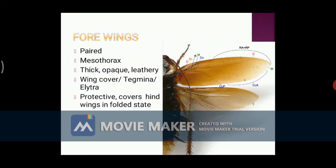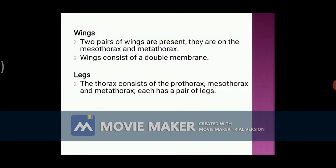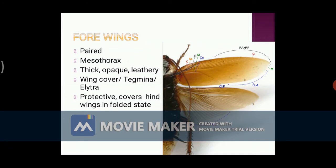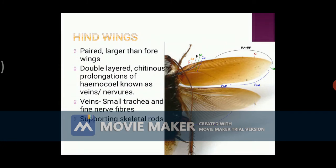Flying is because of continuous beating of the wings. Since the cockroach belongs to class Insecta, it has two pairs of wings. The first pair, or the anterior pair of wings, is also known as forewings. They are modified into a membranous structure and are not involved in flight. They protect the body. In a resting state, the wings remain in the folded state.